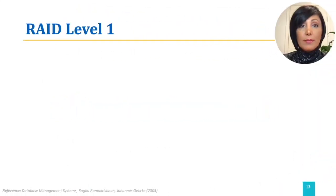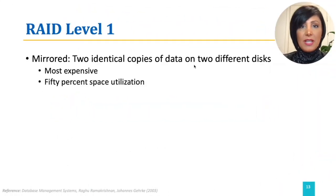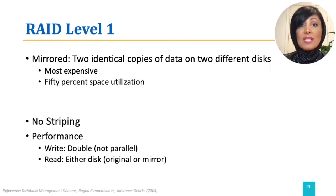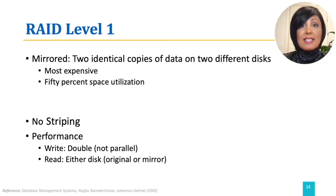In RAID level one, two identical copies of data are kept. That makes RAID level one the most expensive solution with the lowest utilization, which is at 50%. No stripping is used in RAID level one. Writes are scheduled to happen on one disk first and then follow on the mirrored disk, to protect against incidents of global system failure during a write event causing an inconsistency.